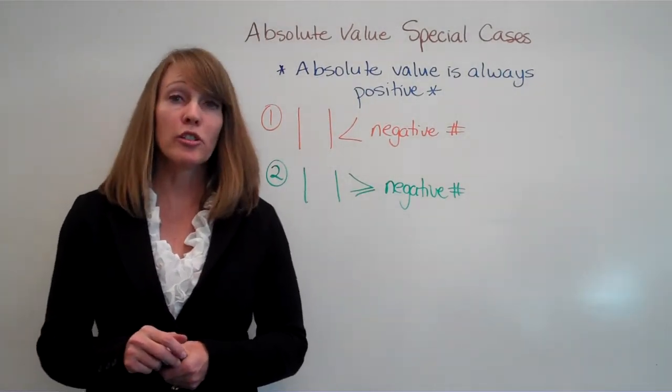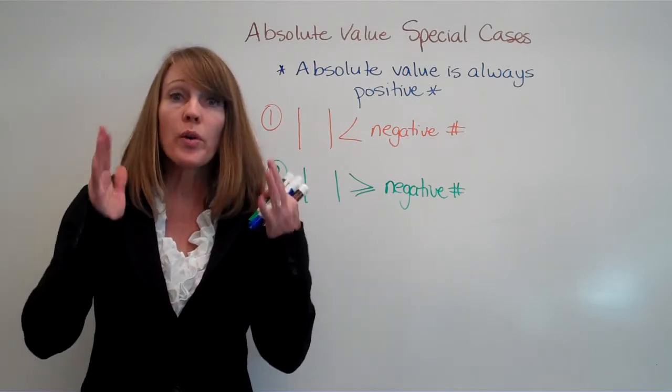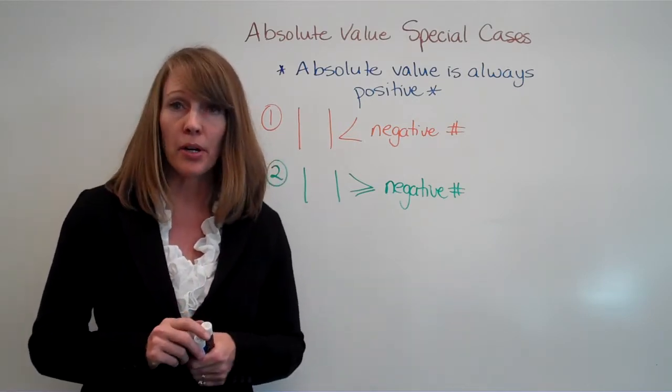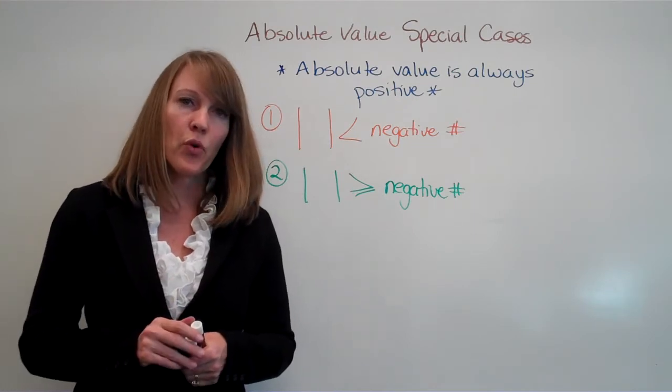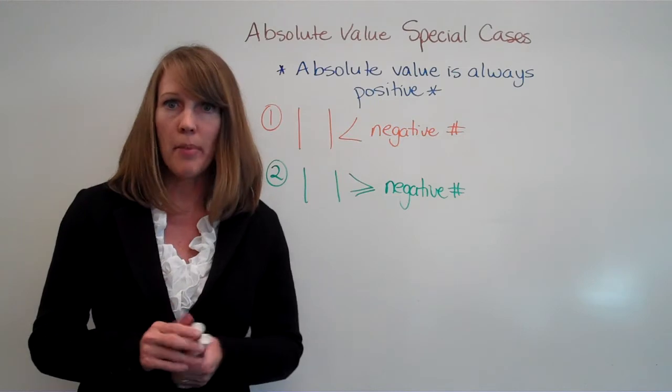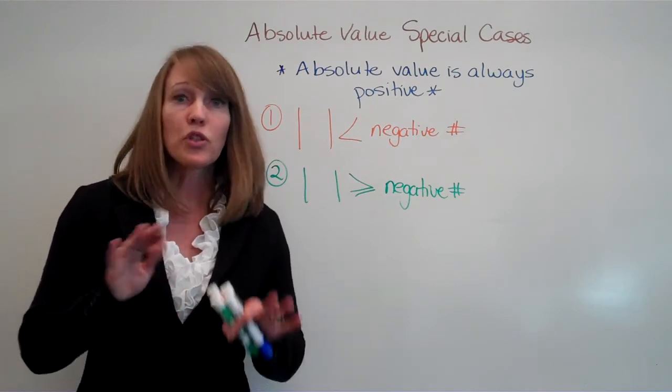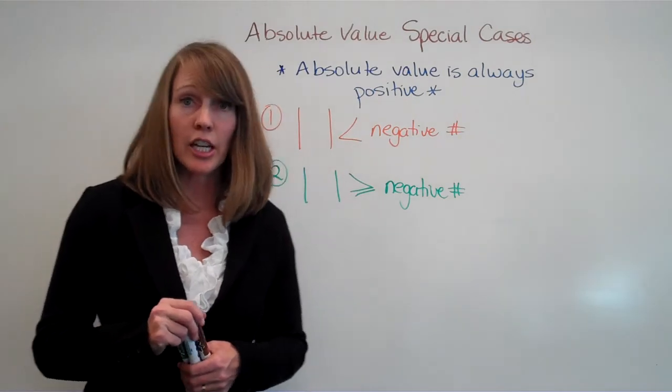Recall when we had absolute values before, we said that the result of an absolute value always resulted in a positive number. So we had a special case before that we said an absolute value could never equal a negative number. That was just not possible. However, when you throw in an inequality, you have two special cases, so let's take a look at those.